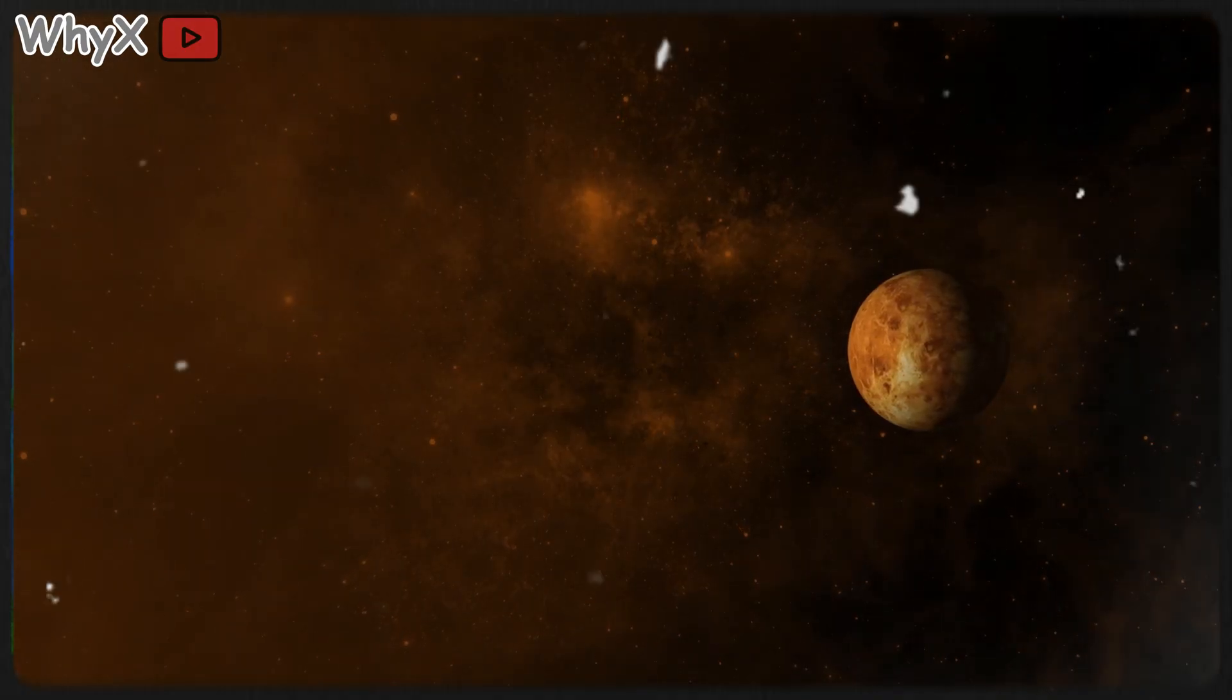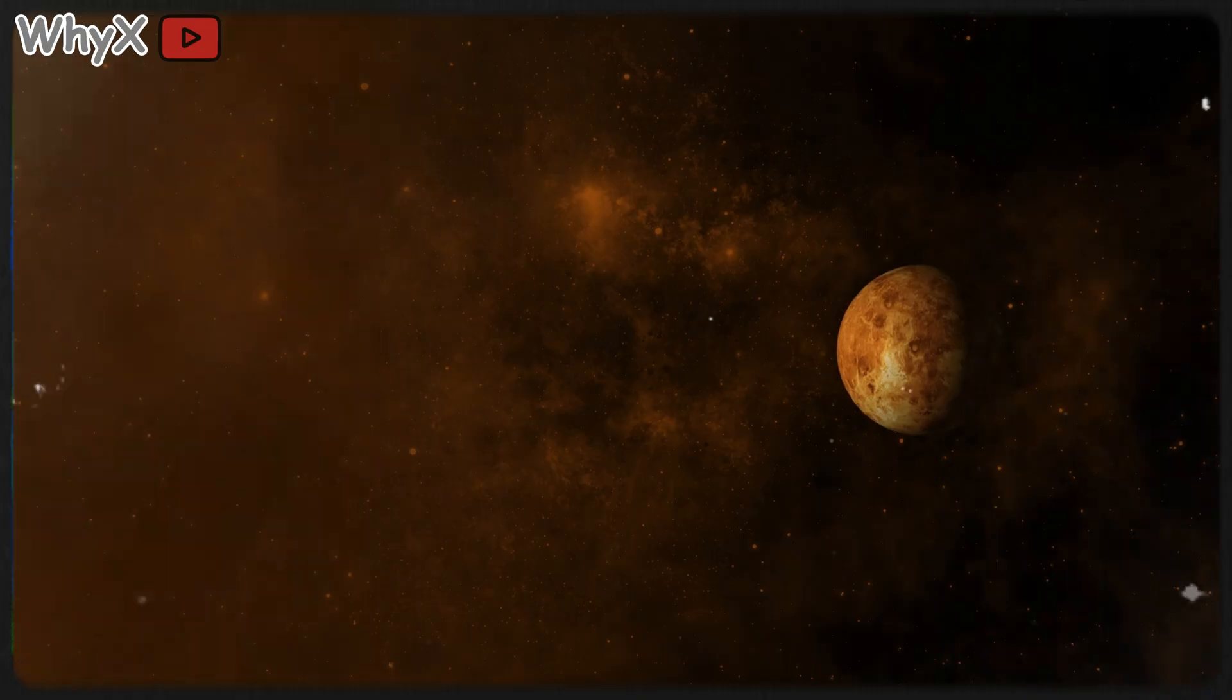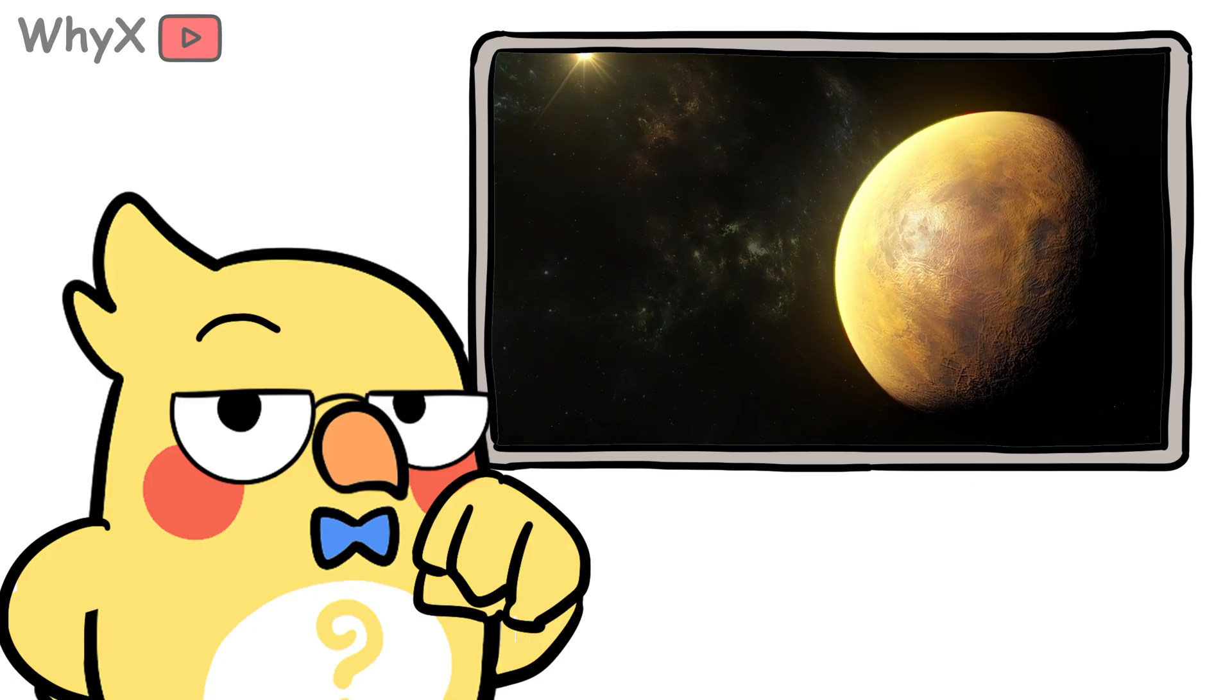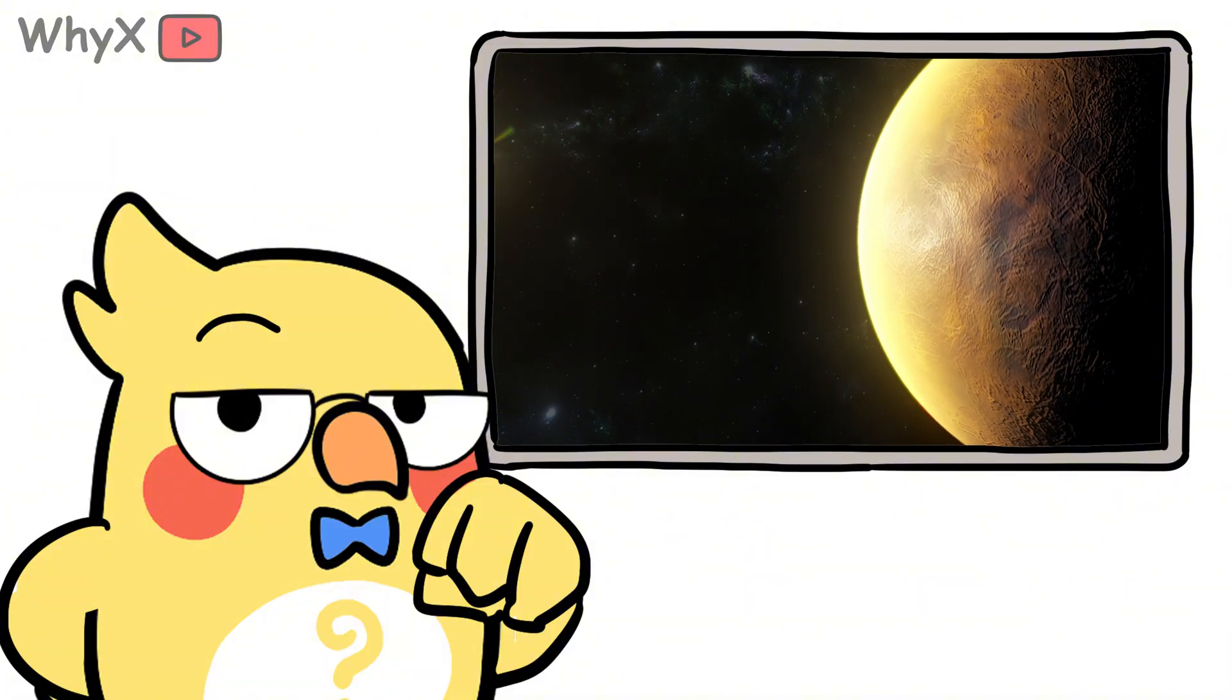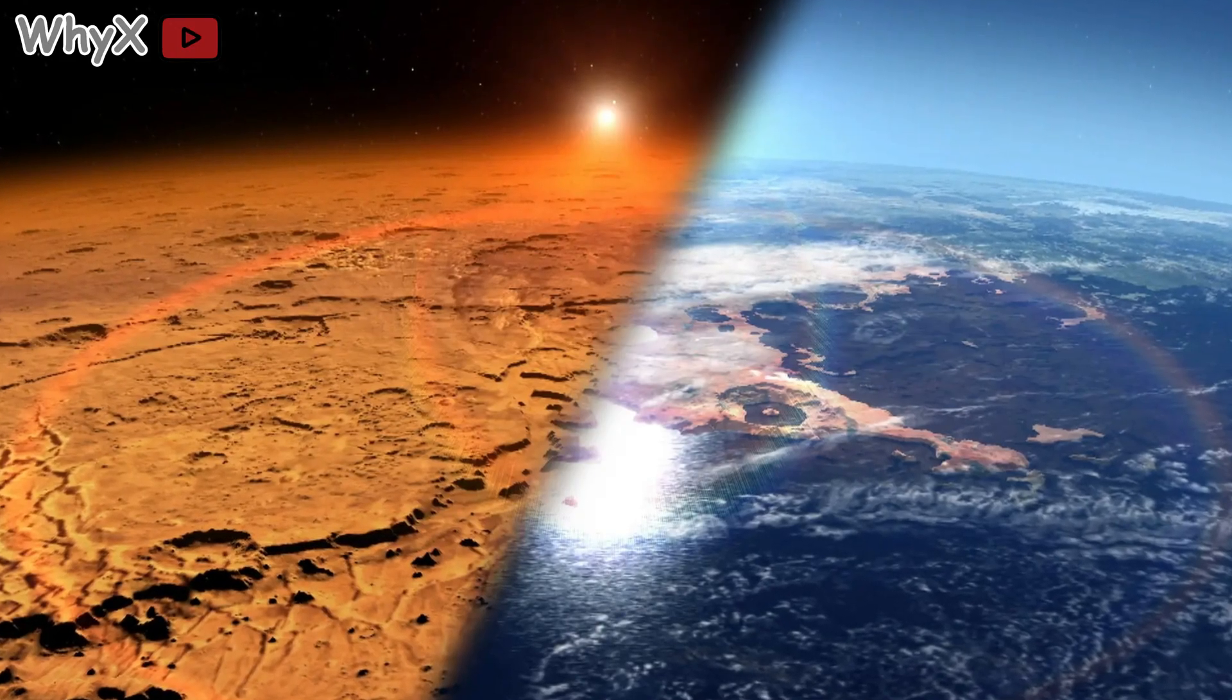On Venus, something stalls. Maybe it never cools enough to condense long-lived oceans. Maybe its water gets split by sunlight and hydrogen leaks to space. Maybe the crust behaves as a lid that never quite breaks into mobile plates. You can keep playing this game of near-misses.